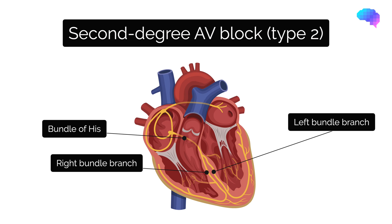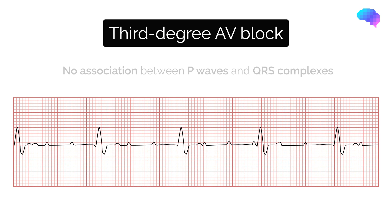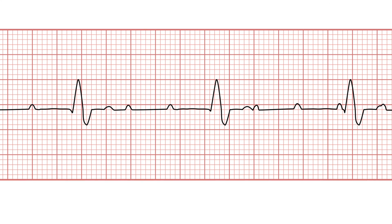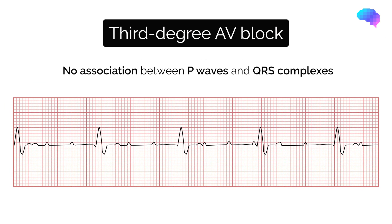Patients are at risk of progressing to complete AV block, and the underlying cause should always be investigated. Third degree, or complete AV block, occurs when there is no electrical communication between the atria and ventricles — in other words, the atria and the ventricles are functioning independently.